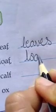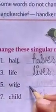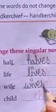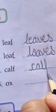Fourth, it is loaf — F at the last. Now we will remove F and it will become loaves. Now you can see wife — we will remove FE and it will become wives. This is a calf, so it will become calves.